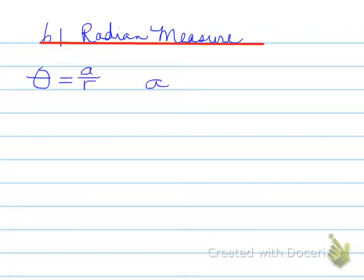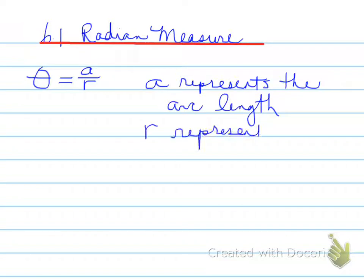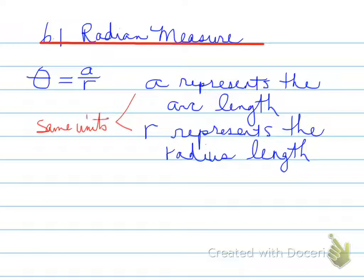6.1, radian measure. So given a formula, theta equals A over R. A represents the arc length, R represents the radius length, and finally, what we need to remember is that both the arc length and the radius must be measured in the same set of units.